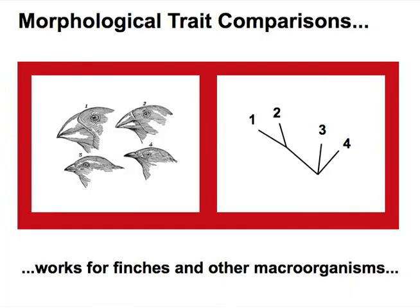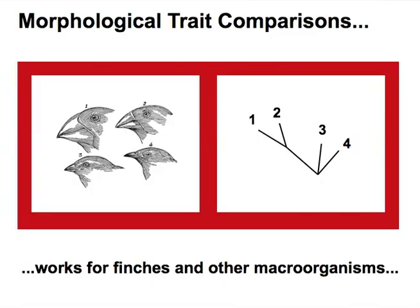Take the famous example of Darwin's finches. When we look at these birds, we can see they have very characteristic beak sizes and shapes, among other features. Based on that, we can infer something about the relationships among different organisms and build relationship trees. We would say that Finch 1 and Finch 2 were more likely to share a common ancestor than either Finch 3 or Finch 4. That worked for finches and for macro-organisms, but it doesn't work for microbes.